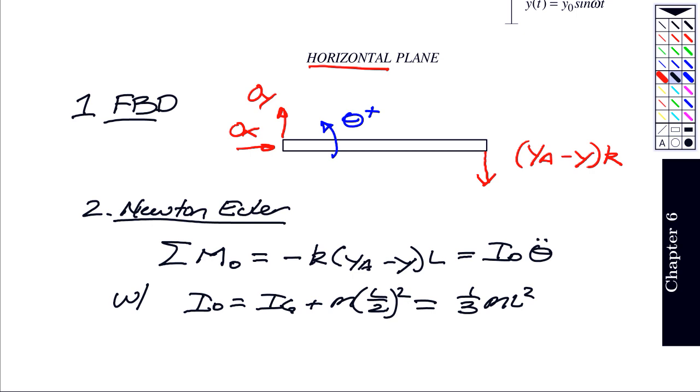So from this, we can say that the equation of motion is going to be one-third m L squared theta double dot, plus k L yA. On the right hand side it's going to be k y, which is y naught sine omega t.